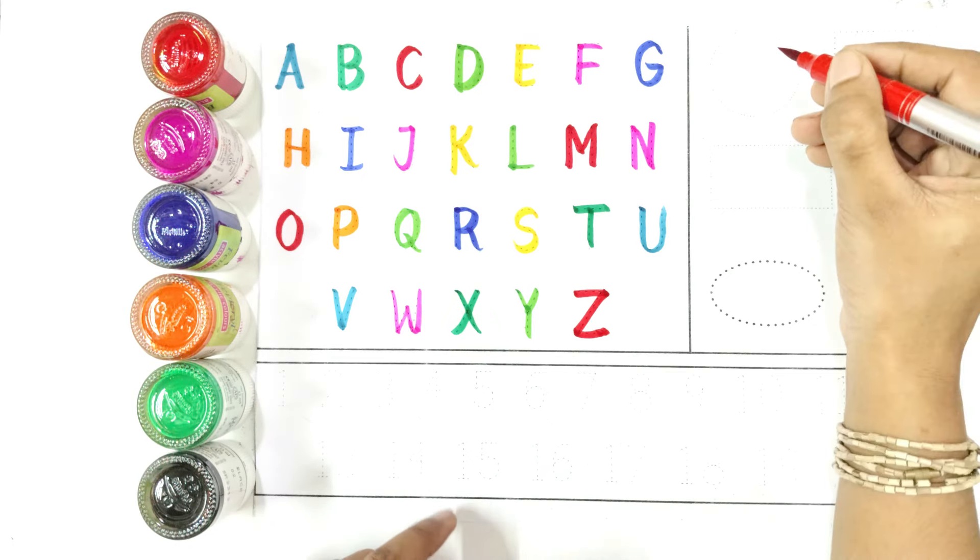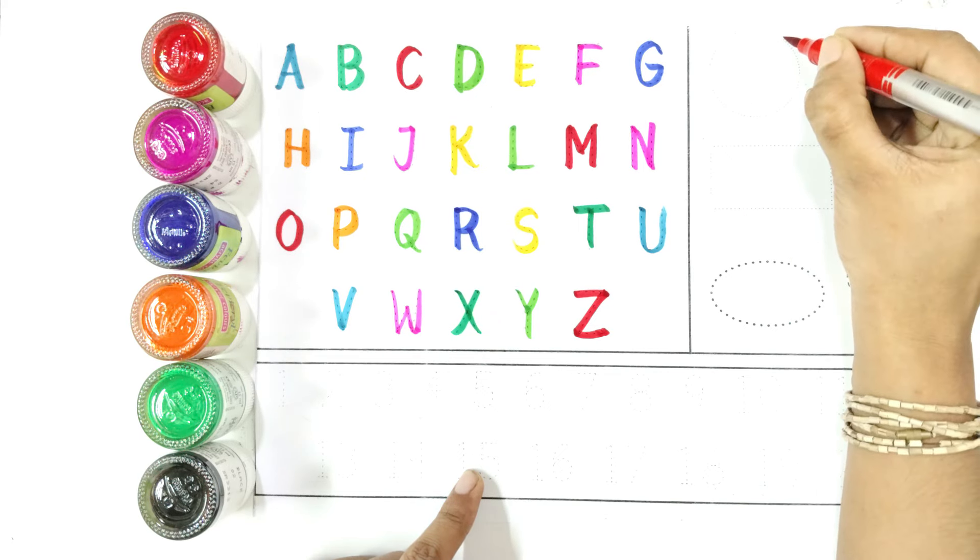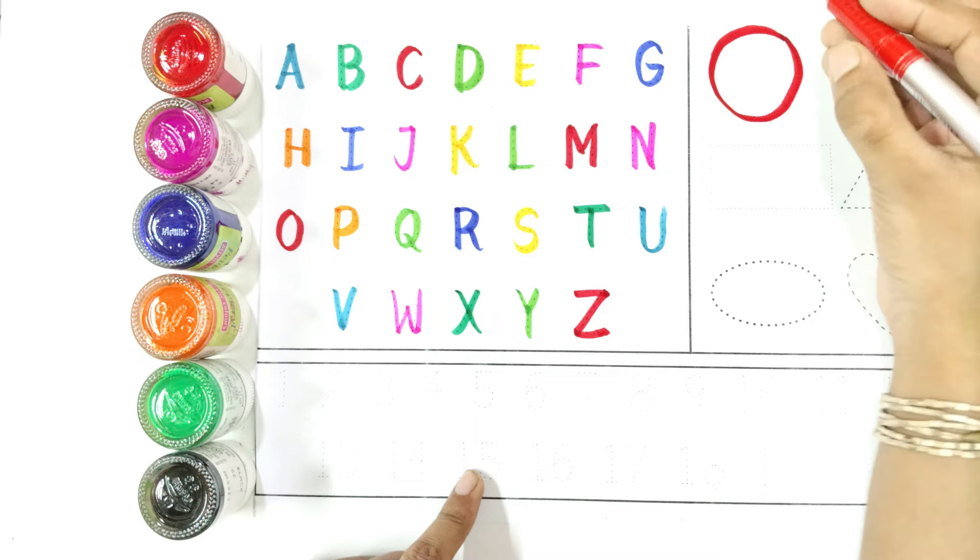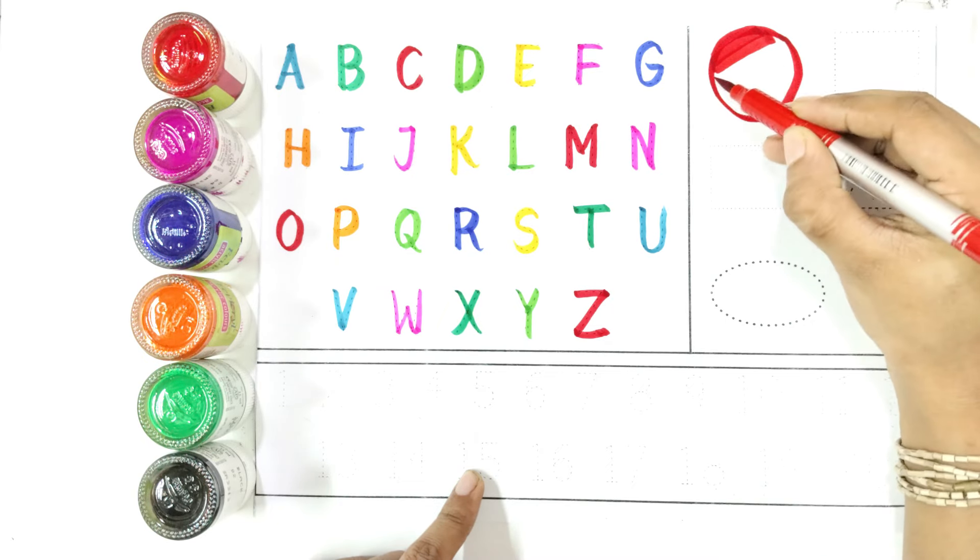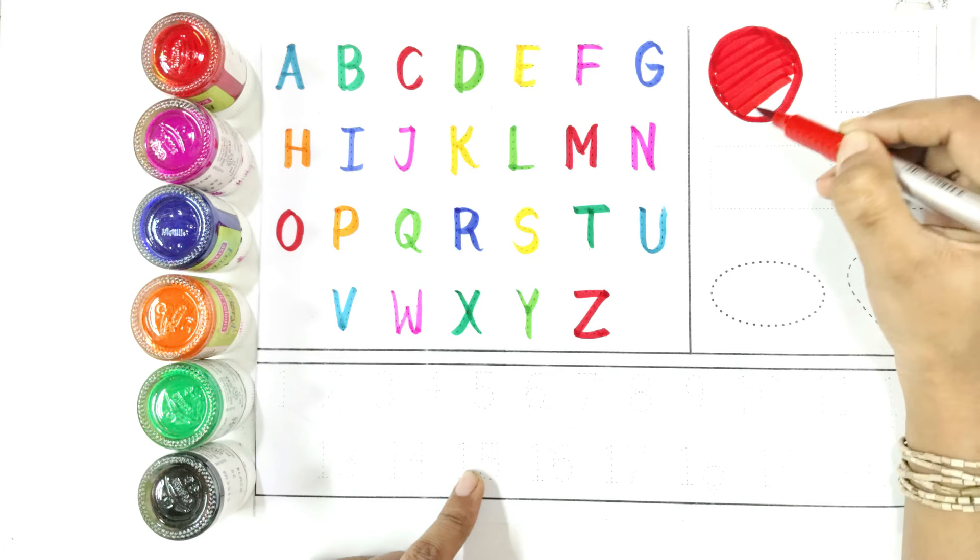Say with me the name of shape circle. Draw with me a circle. Again say with me circle.